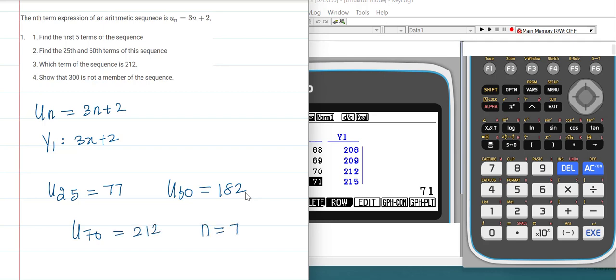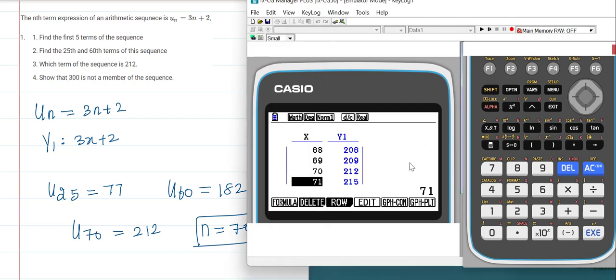Show that 300 is not a member in the sequence. What do you do?